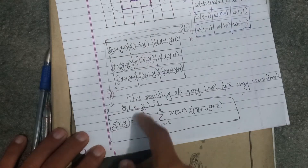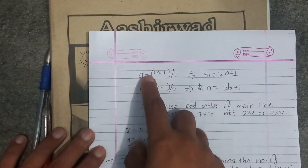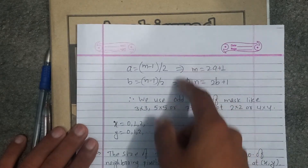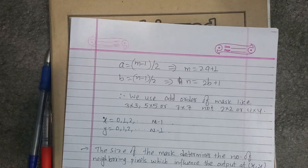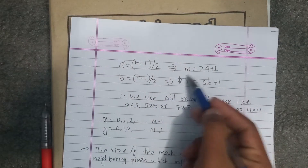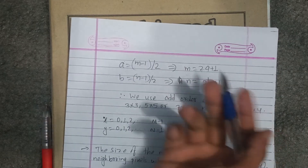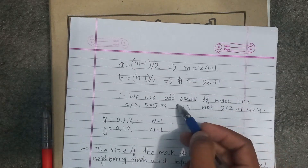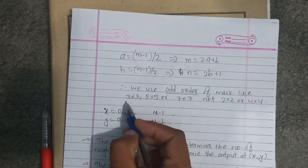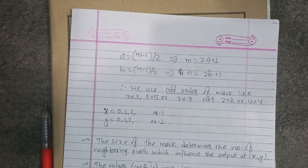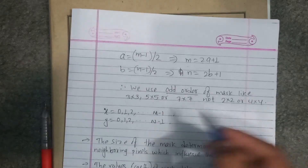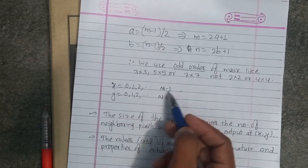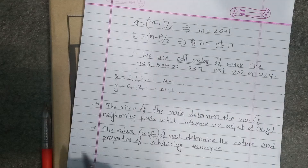The mask size is defined as (2a+1) × (2b+1). We use odd-order masks — for example, 3×3, 5×5, 7×7. Using odd-sized masks ensures there is always a clear center element to anchor the mask on the pixel being processed. The range runs from 0 to a−1.